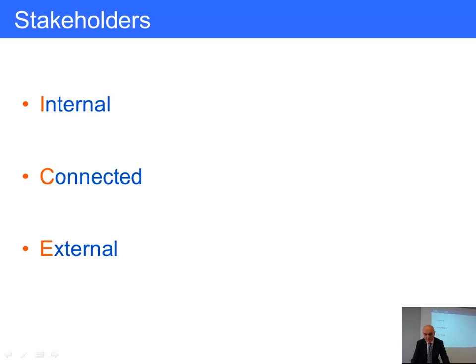An internal stakeholder is definitely somebody who is within the organization, who is part of the organizational system. A good example would be an employee or a manager or one of the directors. They are part of the organization, they rely on the organization for their income. They are definitely part of it.